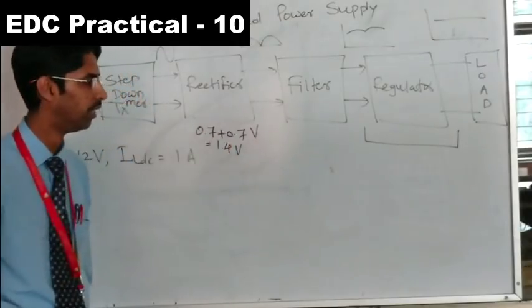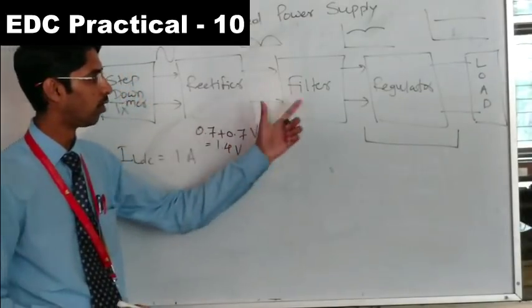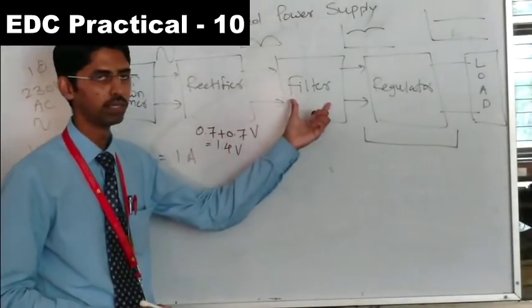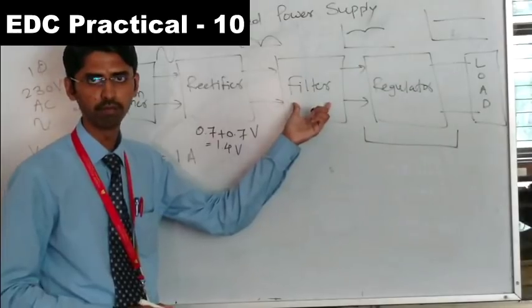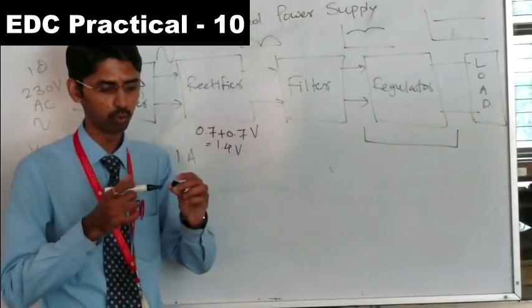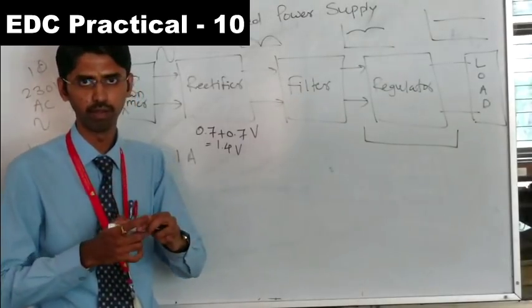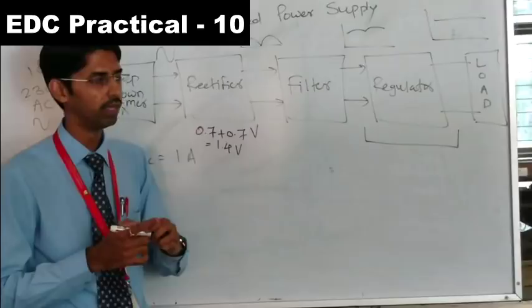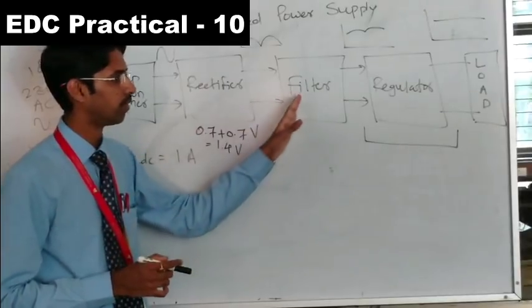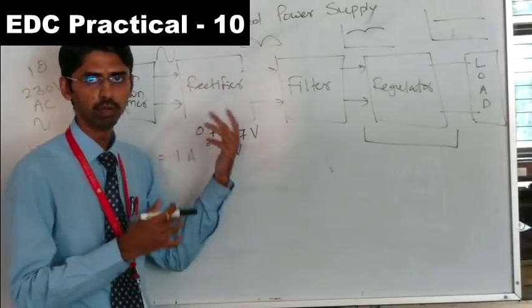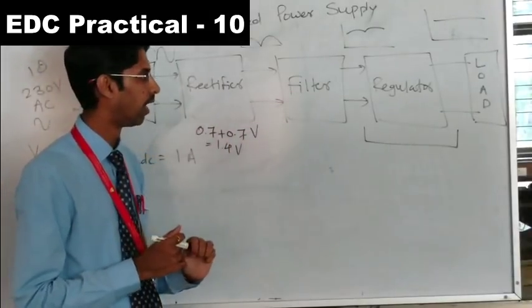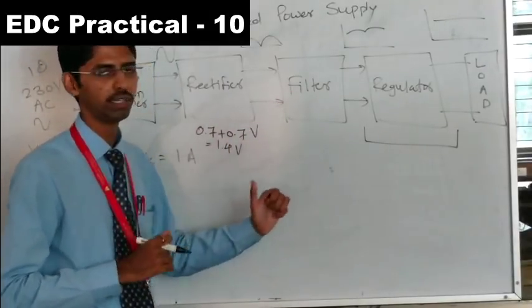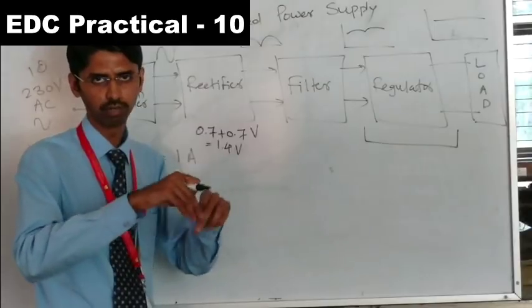There is no voltage drop through the filter since we use a capacitor filter. Different filter types exist — choke filter, pi filter, and capacitor filter — but we use the capacitor filter because it is readily available in the market and easy to construct.